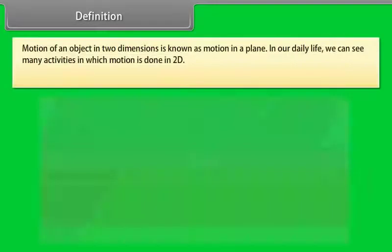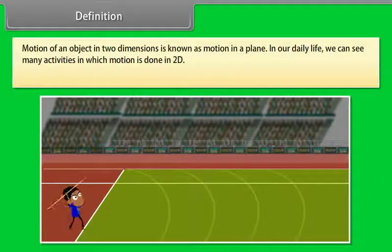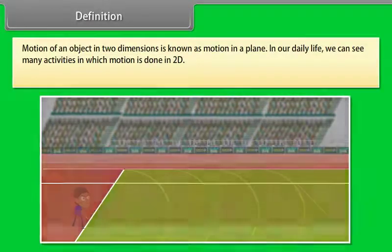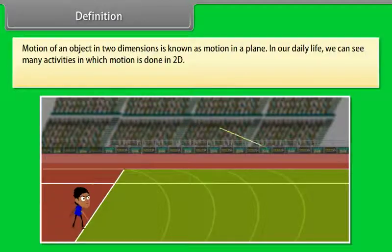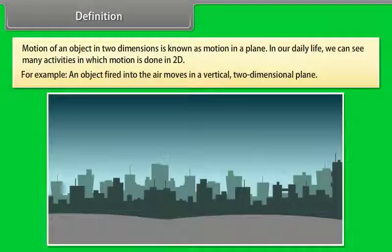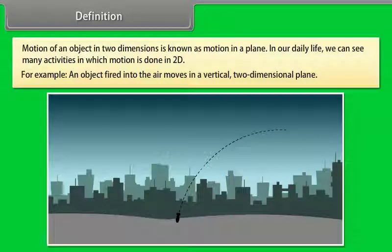Motion of an object in two dimensions is known as motion in a plane. In our daily life, we can see many activities in which motion is done in two dimensions. For example, an object fired into the air moves in a vertical two-dimensional plane.